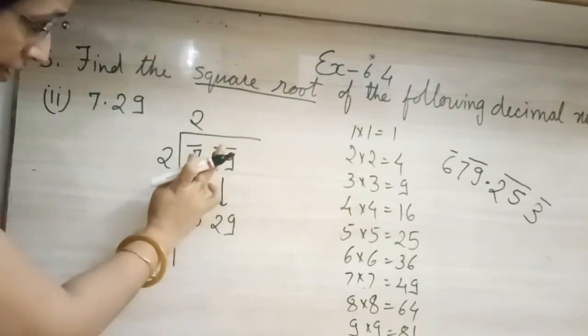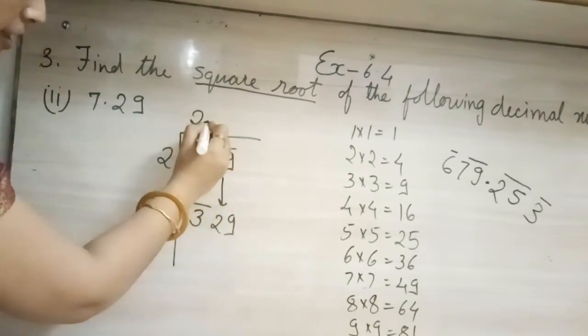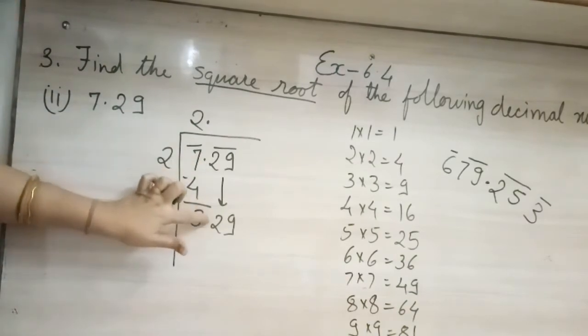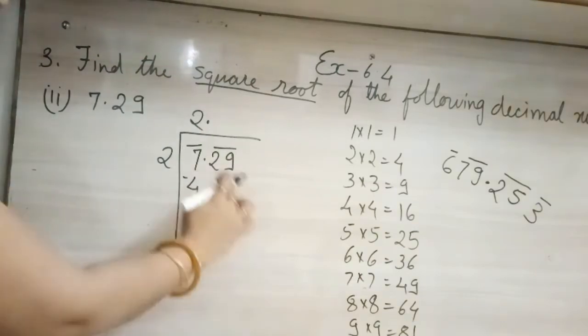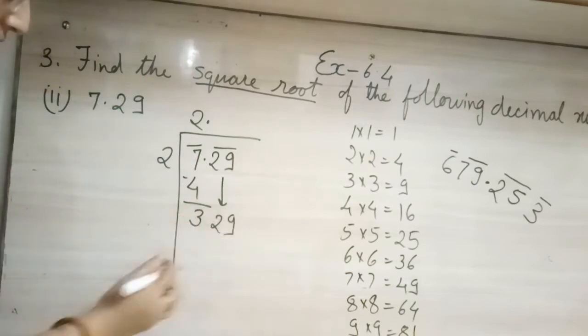And decimal point will not come down. Decimal point is here below. Instead of copying down, you will put the decimal point up. Instead of writing down, you will copy this decimal point up, just like normal division. Okay. And both digits will come down. Both the digits will come down.